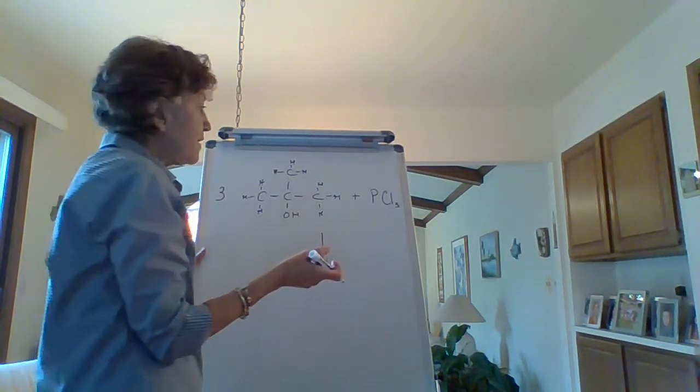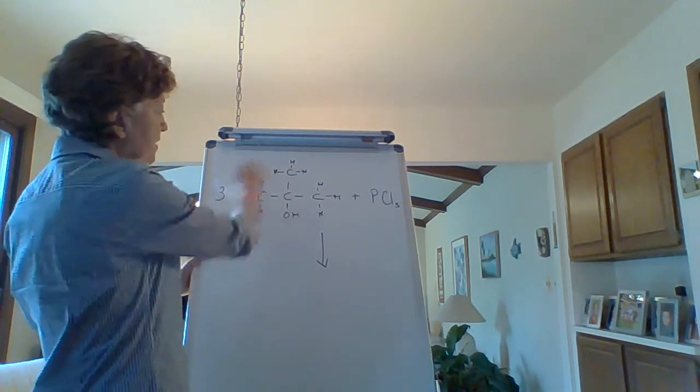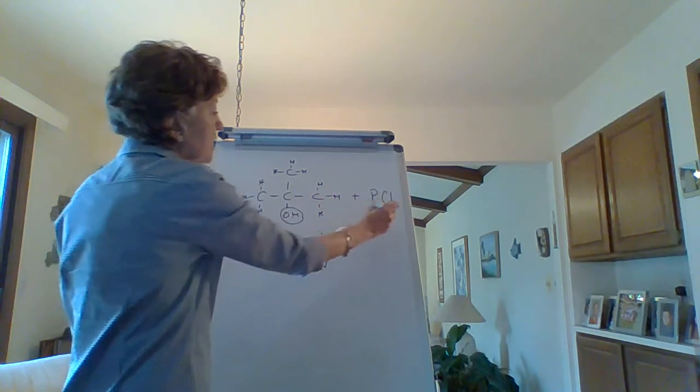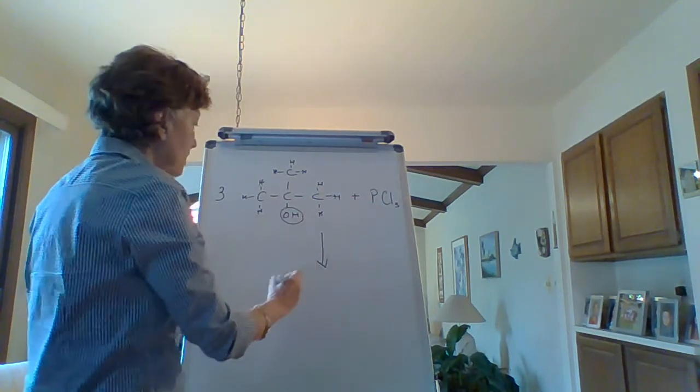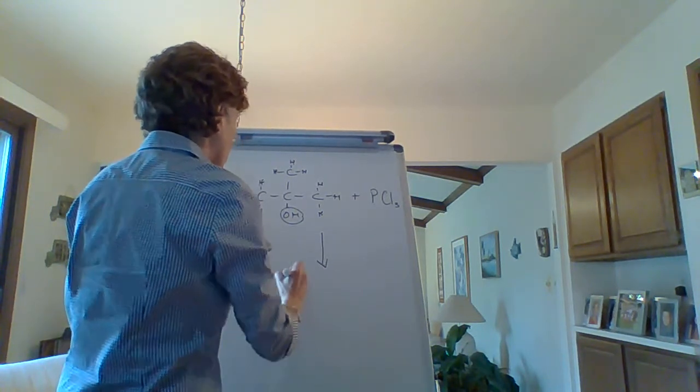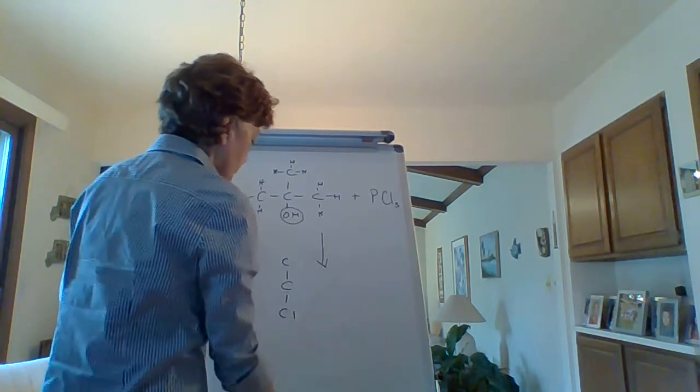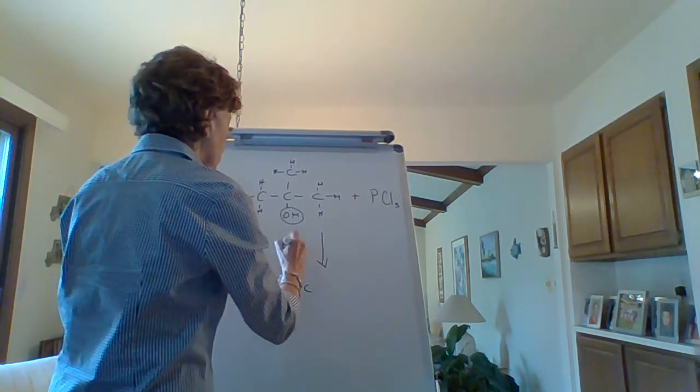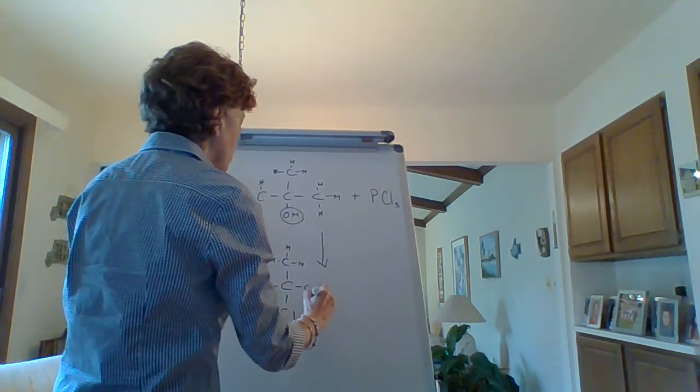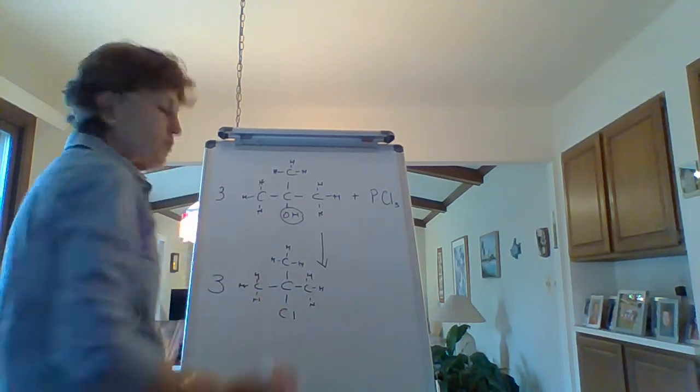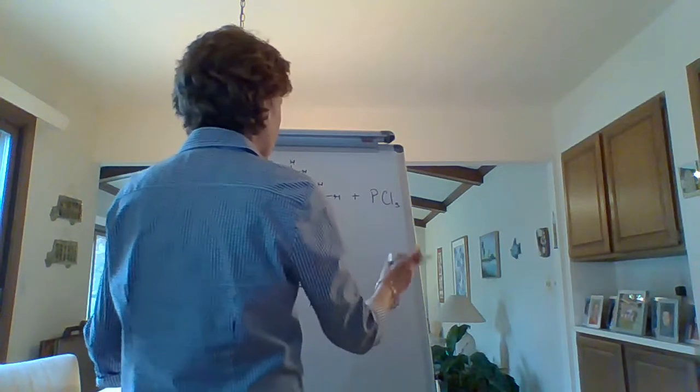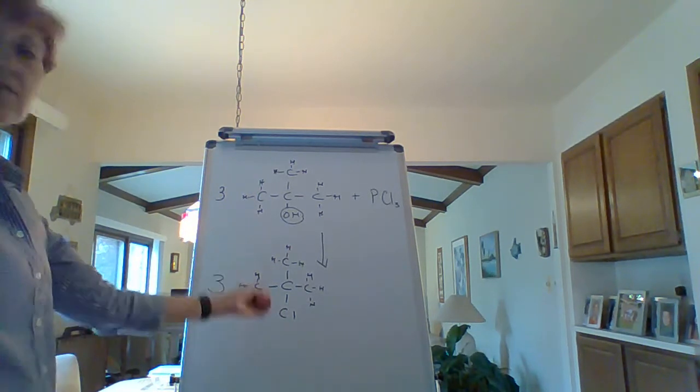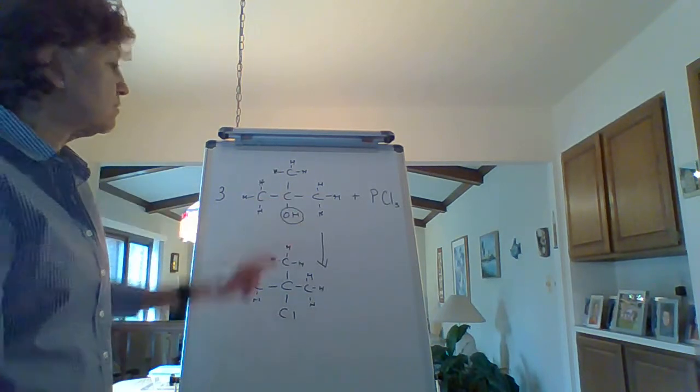If you have three of these alcohols, each one is going to pick up one chlorine. The OH and the chlorine change places. The hydroxyl group just changes places with your halogen, and you end up having three of these plus phosphorous acid.